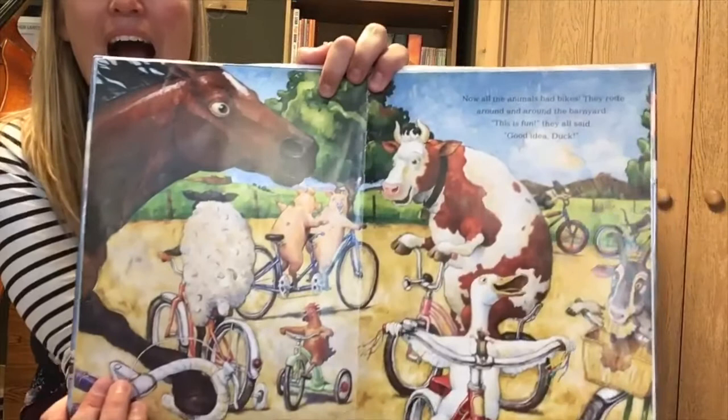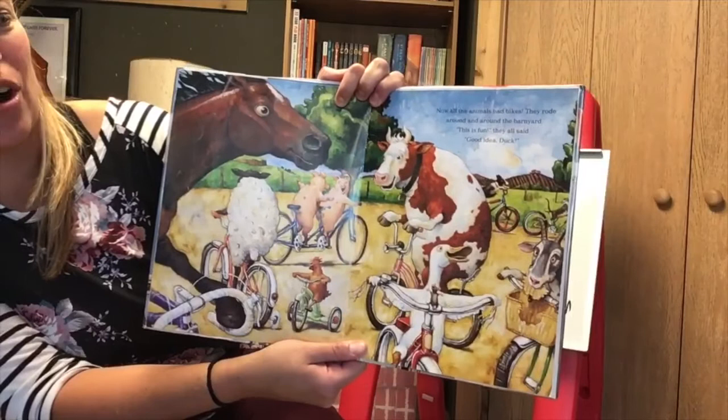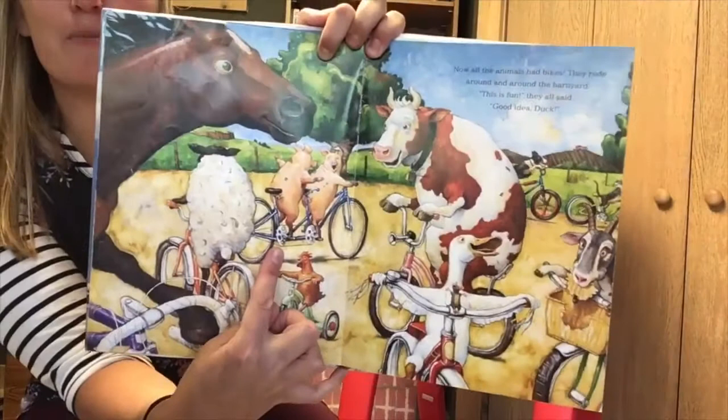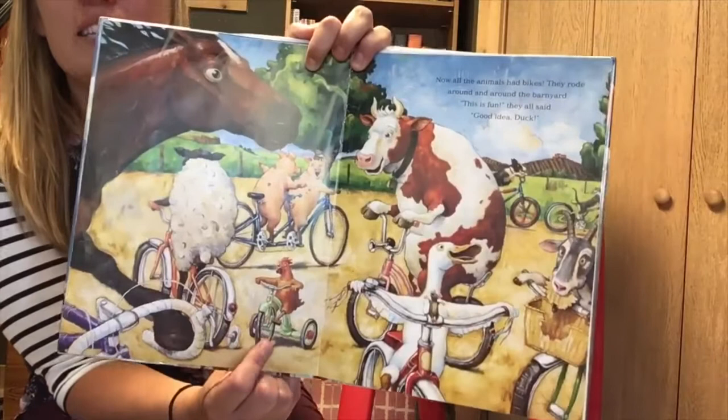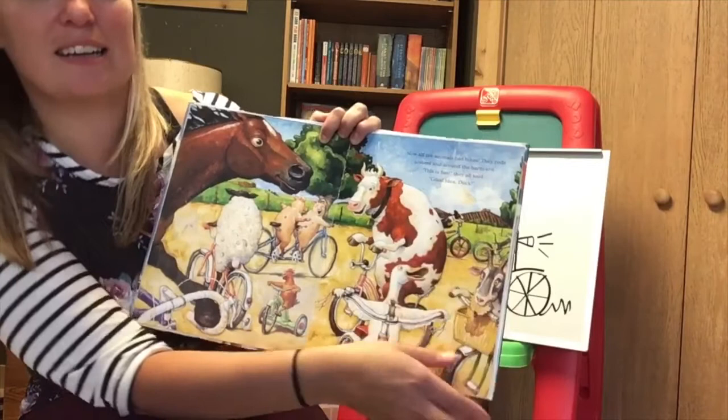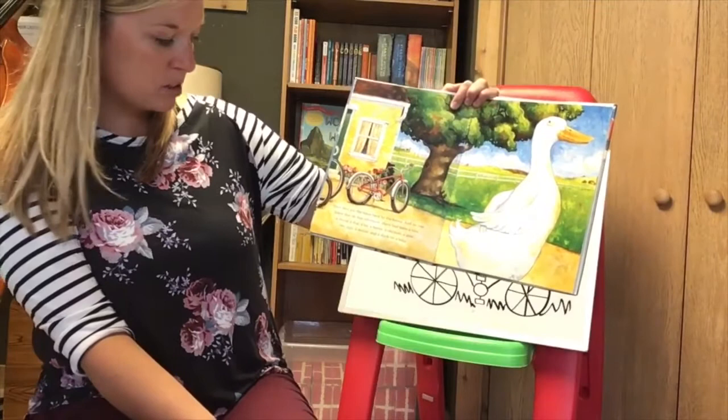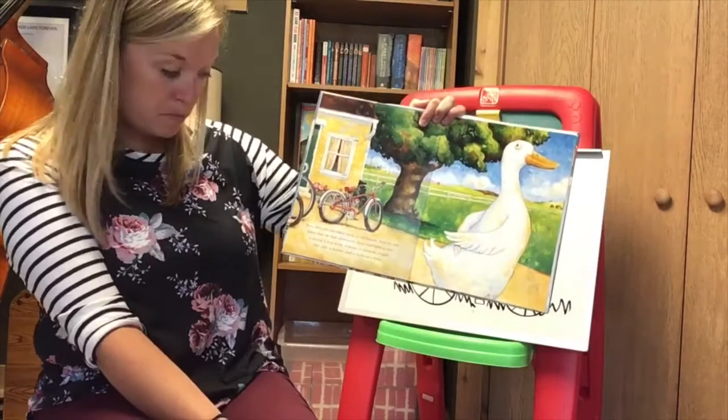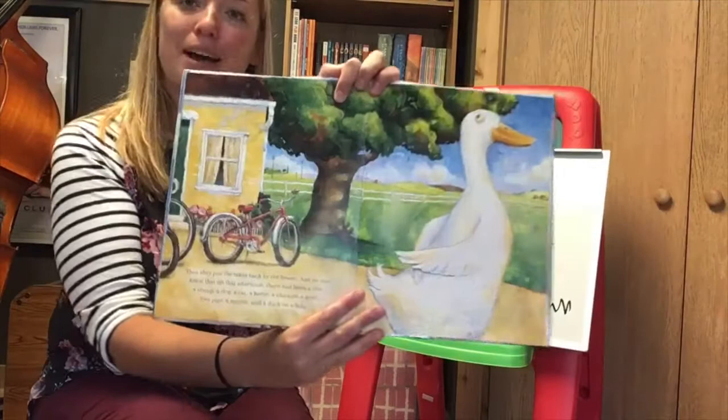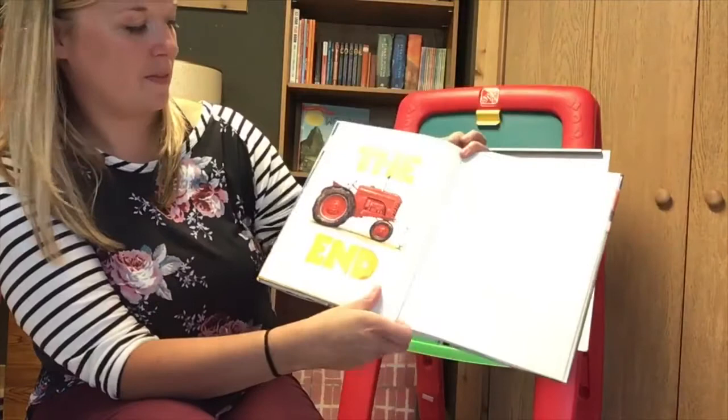Now all the animals had bikes they rode around and around the barnyard this is fun they all said good idea duck oh look the pigs even have a tandem bike so two people can ride oh and look I see a tricycle for the chicken because the chicken is a bit smaller than everyone else needs a smaller bike oh my goodness I see the dog and the cat then they put the bikes back by the house and no one knew that on that afternoon there had been a cow a sheep a dog and a cat a horse a chicken a goat two pigs a mouse and a duck on a bike the end